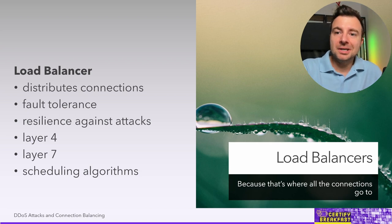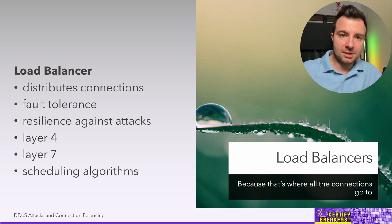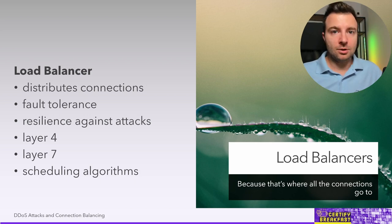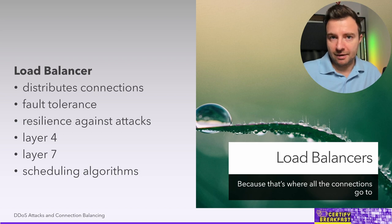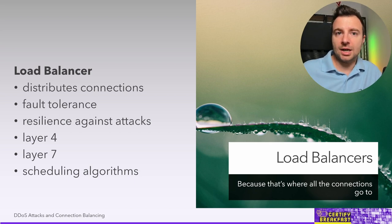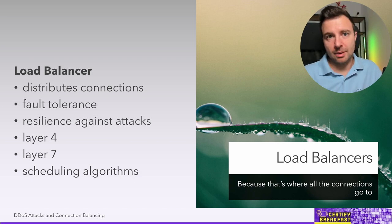How does the load balancer choose a server? It could do it randomly — but this doesn't take server load into consideration and might result in overloaded servers while others are idle. A better solution is to track how many requests have been sent to each server and query them periodically about CPU usage and active connections. Another simple method is round robin — send the first request to server one, second to server two, third to server three, then cycle through again.